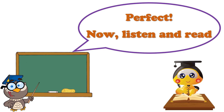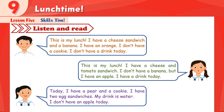Well done! It's time to start our lesson today. Enjoy it! Listening — listen and read. This is my lunch. I have a cheese sandwich and a banana. I have an orange. I don't have a cookie. I don't have a drink today. This is my lunch. I have a cheese and tomato sandwich. I don't have a banana, but I have an apple. I have a drink today. Today, I have a pear and a cookie. I have two egg sandwiches. My drink is water. I don't have an apple today.